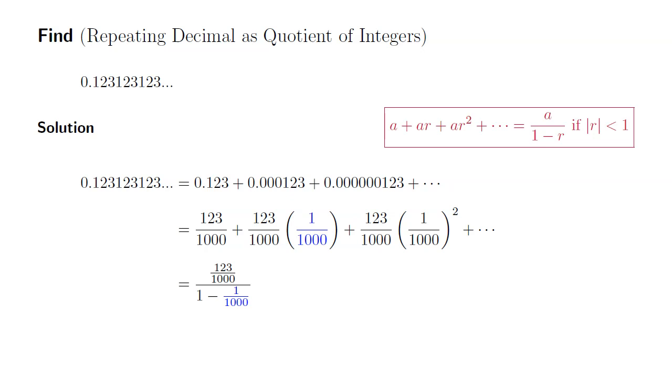So we have 1000 on the bottom, so I'm going to multiply top and bottom by 1000 so that 1000 cancels out. So you have 123 on top. Distribute 1000 to 1, we get 1000. Distribute 1000 to negative 1 over 1000, so 1000 cancels out. You are left with negative 1, which simplifies to 123 divided by 999.